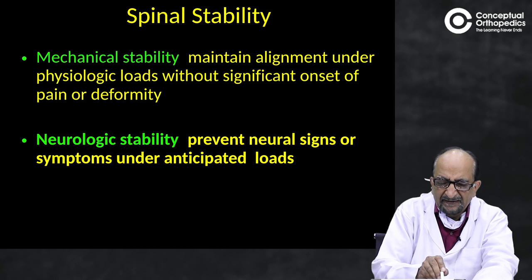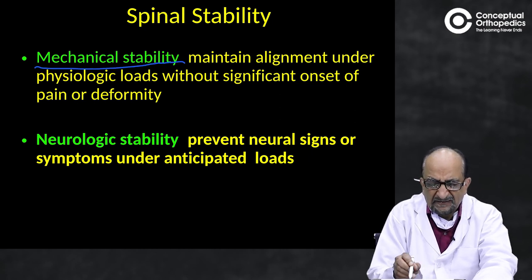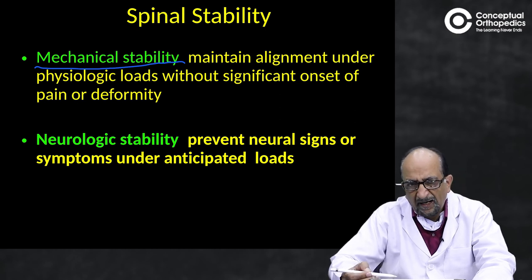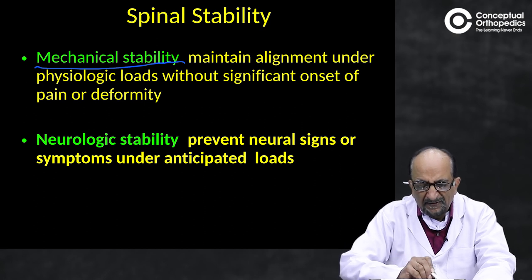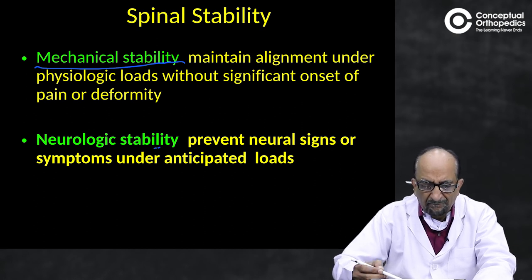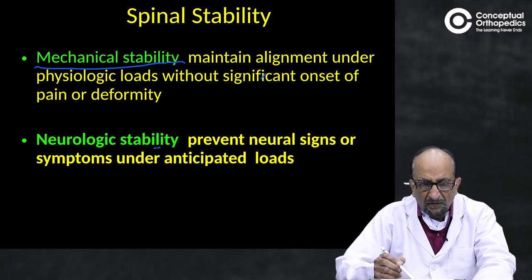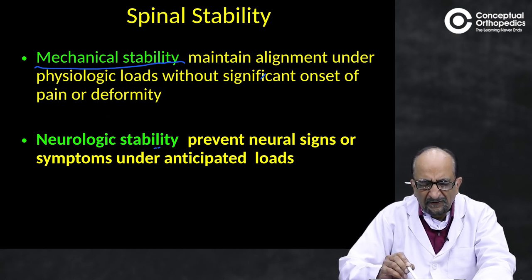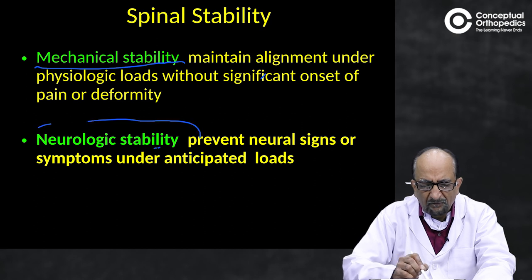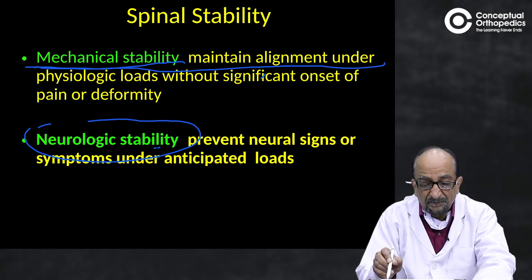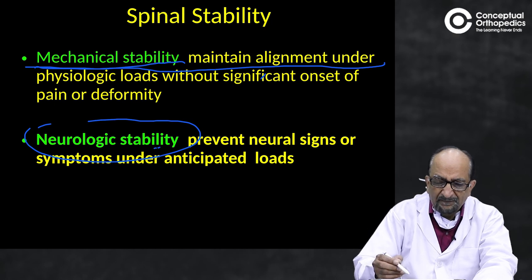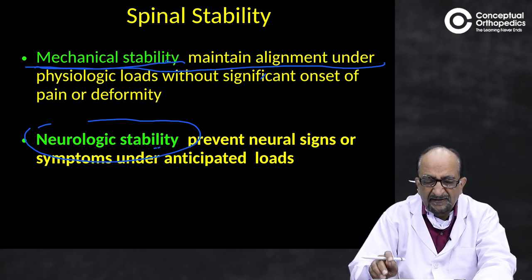Sometimes we achieve mechanical stability but do not give enough credence to neurological stability — as a result the load on the nerves increases and the person starts having neurological deficits. Vice versa, if we place too much emphasis on neurological stability by removing bones and facet joints around the nerves, although the nerves are offloaded, the structural stability of the spine is distorted and the spine becomes unstable. So for spinal stability, both mechanical and neurological stability are important.